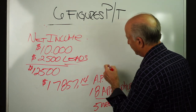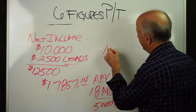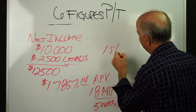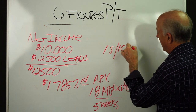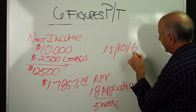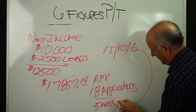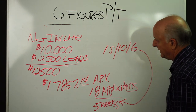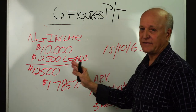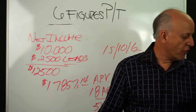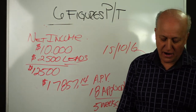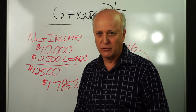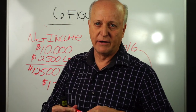Which puts us right back to 15 leads, 10 appointments, 6 sales per week. So that's the formula for you to figure out exactly what you need to do in production to hit your income goals.